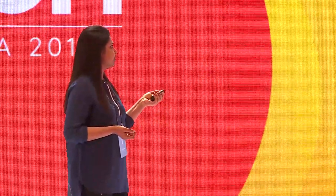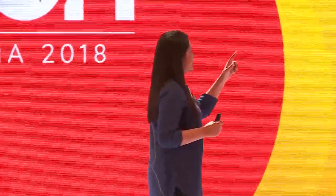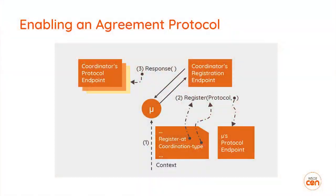Let's look at how the agreement protocol works. After the registration phase, the communication phase begins. A microservice receiving an incoming transaction context will have a unique transaction ID, a register-at URL, and a coordination type. The register-at URL is where the microservice can go and register to find the coordinator. The coordination type is the protocol supported by the original initiating coordinator.